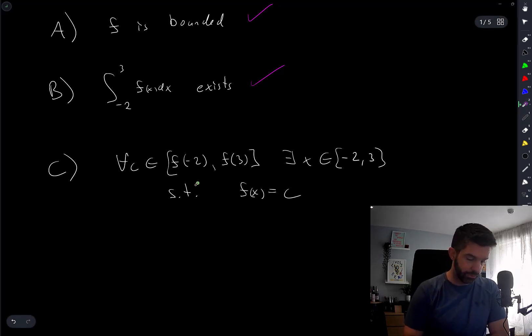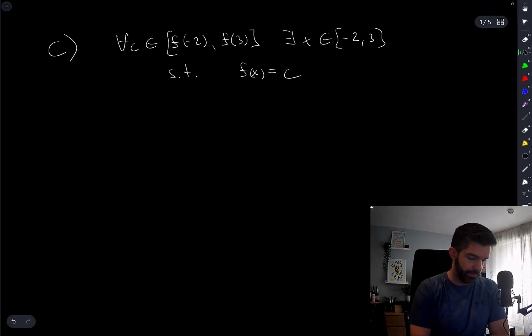f is continuous, so there can't be a value. And I've ordered these like this, right? These might be flipped. f of negative 2 might, in fact, be greater than f of 3, but whatever. For any value in between these two numbers, the function f can't skip over that. So, yeah, that's true.